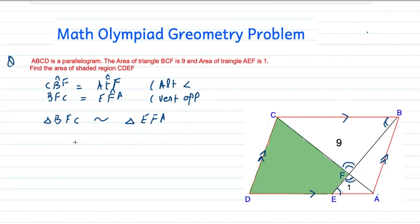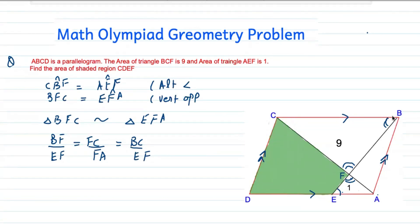When two triangles are similar, the corresponding side ratios will be equal. So we can write BF/EF = FC/FA, and BC corresponding ratio will be EA. Now, naming the area of triangle BFC as A1 and the area of triangle EFA as A2, we have A1/A2 equal to the square of the corresponding side length ratio (L1/L2)².